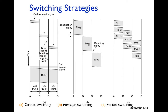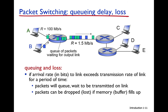In a router there is a buffer. When two packets arrive and one is being transmitted, the other is stored in the queue in the buffer. If four packets are already waiting in the queue and the buffer is full when two more packets arrive, those new packets will be lost. In packet switching, packets can be lost when the router buffer is full.